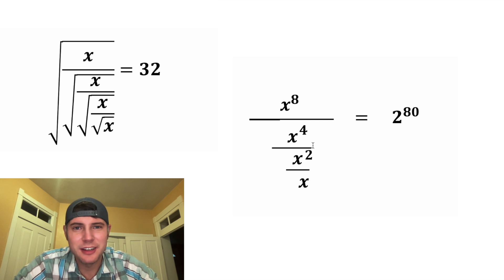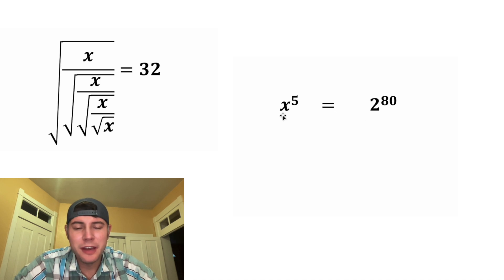And now let's clean up this left-hand side. Let's focus down here. x squared divided by x will simplify to just x. And then x to the 4th divided by x will simplify to x cubed. And then x to the 8th divided by x cubed, we can just subtract 8 minus 3 to give us x to the 5th. And now we have x to the 5th equals 2 to the 80th.